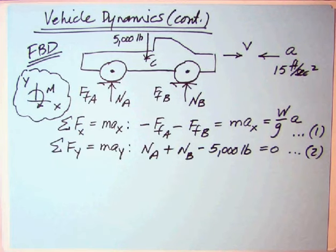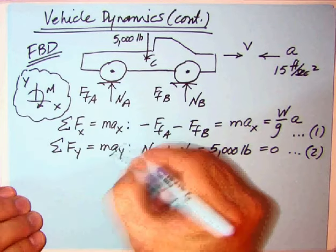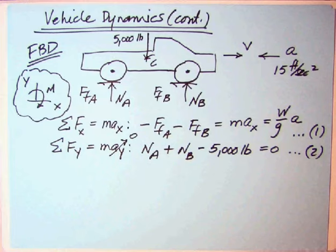The sum of the force in Y equals mass times acceleration in Y, but this only has horizontal motion translation, so acceleration of Y equals zero. We've essentially got a statics situation: N_A plus N_B minus 5000 equals zero. That'll be our equation number two.